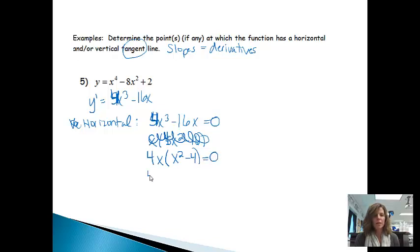So I'll get x² minus 4 equals zero. Then I notice that this is a difference of squares, so we'll get 4x times x plus 2 times x minus 2 equals zero. So there are three places where there will be a horizontal tangent line. It will be when x equals zero, when x equals negative 2, and when x equals 2.